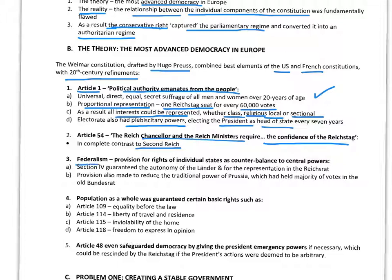Thirdly, federalism was a strength. It retained the best elements of the Second Reich, providing for the rights of the individual states — 18 of them altogether — as a counterbalance to central power. The 18 separate states retained significant powers; the correct term is autonomy, meaning the right of self-rule. The separate states, the Länder, were represented centrally in the Reichsrat, which replaced the old Bundesrat but worked in much the same way.